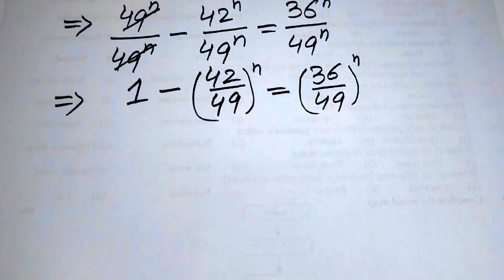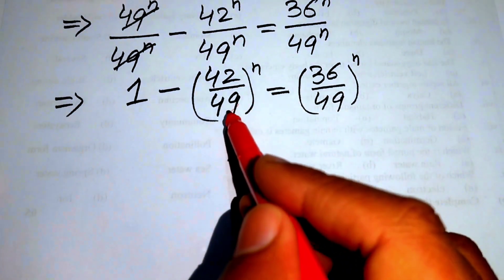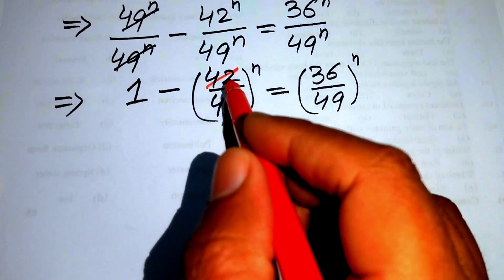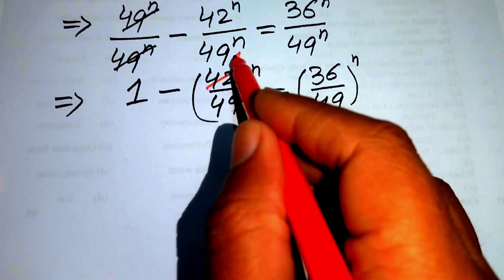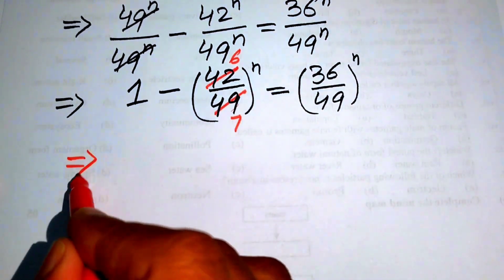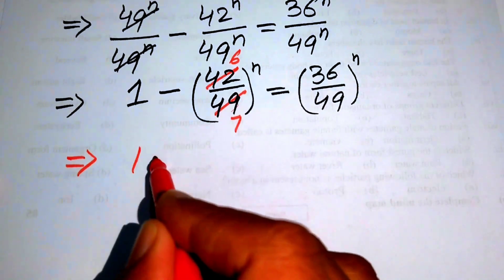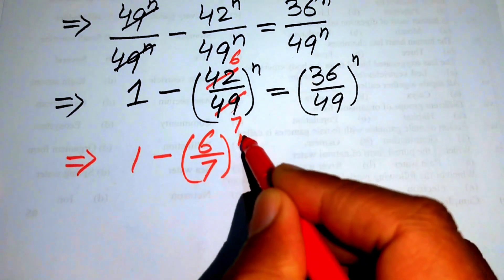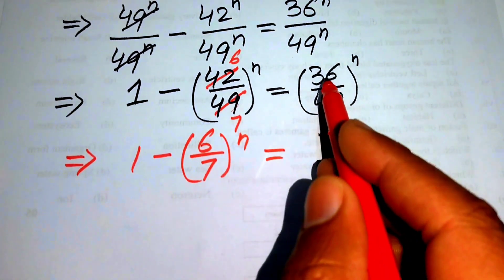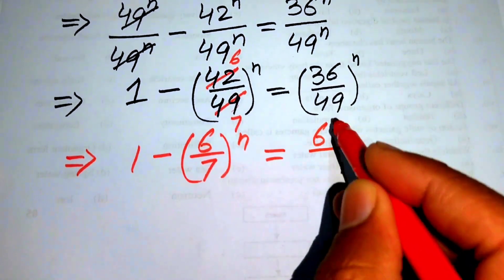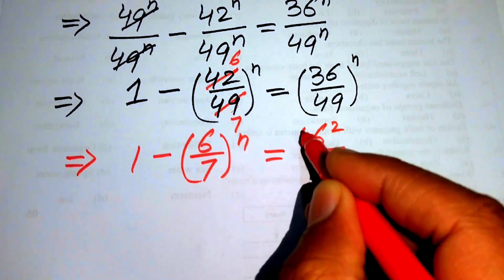Now we simplify. We cancel 42/49 by the table of 7: since 7×6 = 42 and 7×7 = 49, this becomes (6/7)^n. On the right side, we write 36 as 6² and 49 as 7², giving (6²/7²)^n.